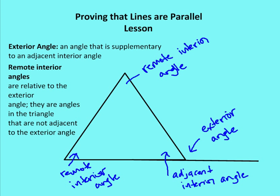Let's go through some definitions we need to know before we get to proving lines are parallel. First is an exterior angle — an exterior angle is an angle that is supplementary to an adjacent interior angle. Here I have an extension of a triangle side, and this angle is the exterior angle to the triangle. The adjacent interior angle is the angle adjacent to the exterior angle, and the remote interior angles are the angles in the triangle that are not adjacent to the exterior angle.